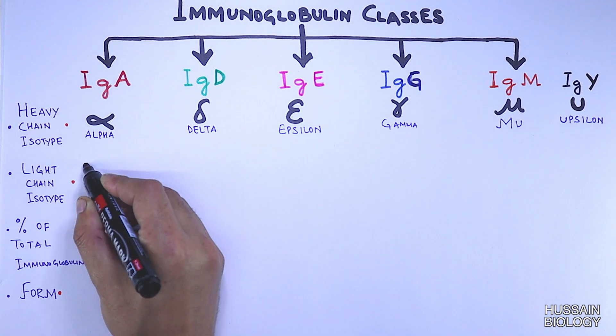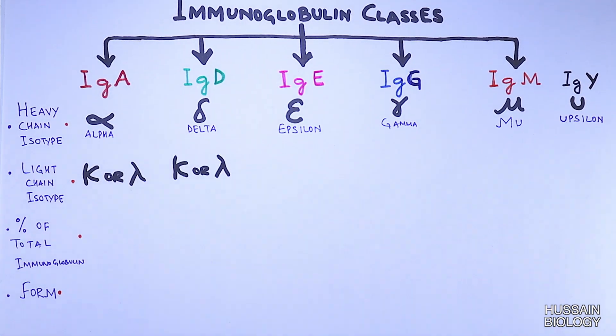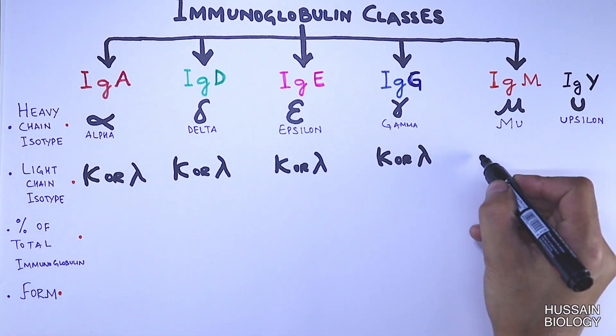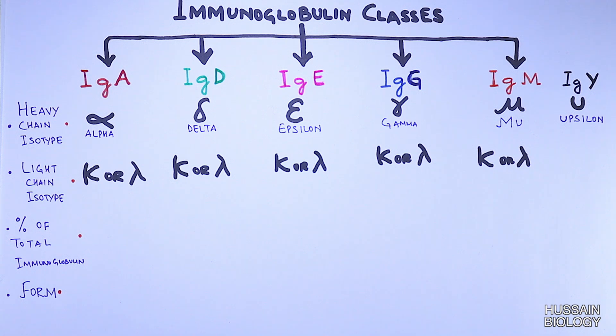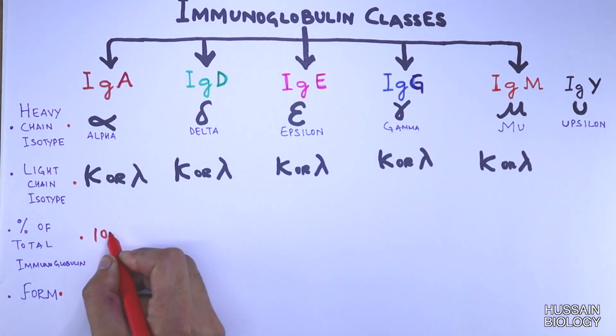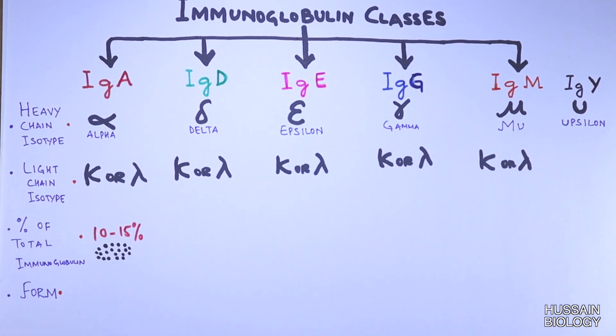which can either be kappa or lambda chain on all the immunoglobulins. Then we look at the total percentage of immunoglobulin present in the serum. We see IgA is 10 to 15 percent of total immunoglobulin.